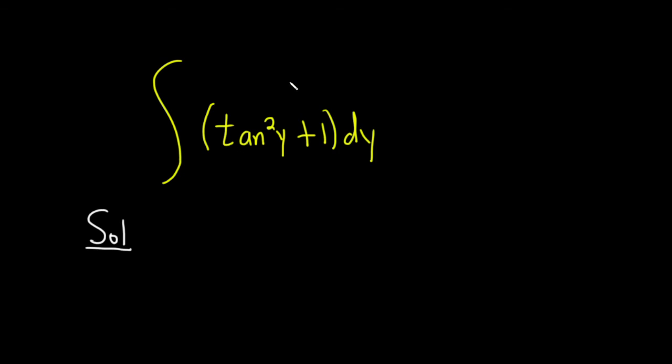Well, it turns out there is an identity you can use. It turns out if you have 1 plus tan squared theta, that's equal to secant squared of theta.